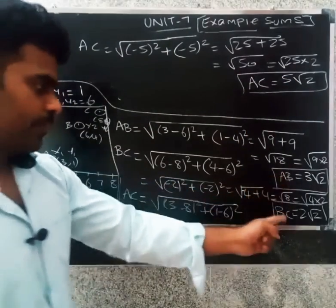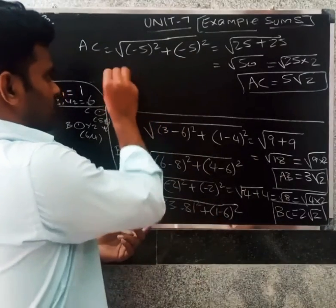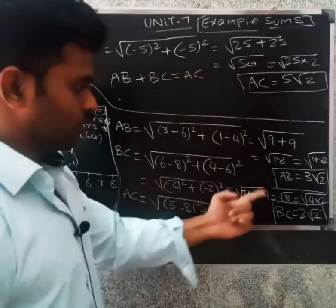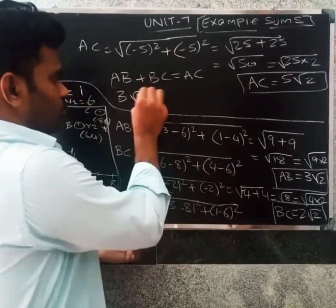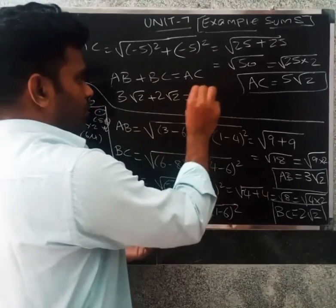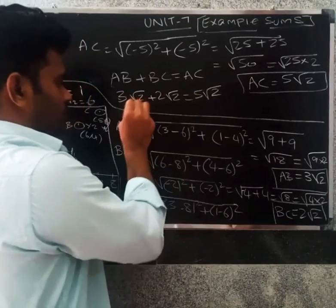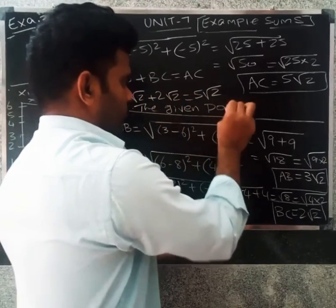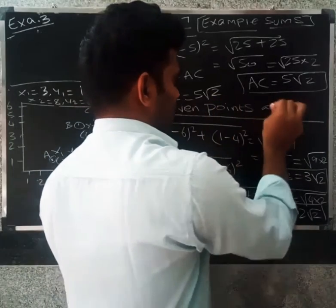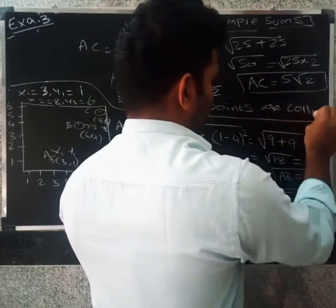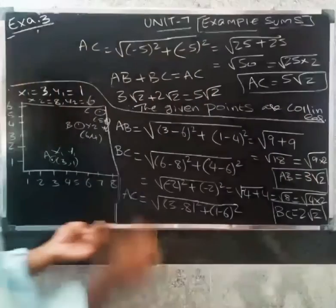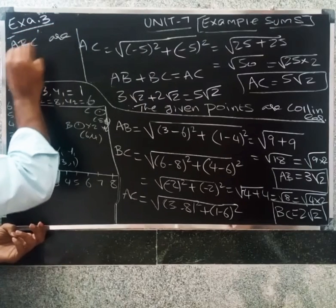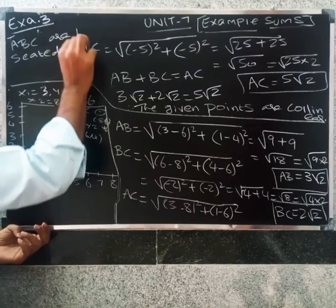Now applying the collinearity condition: AB plus BC equal to AC. So 3 root 2 plus 2 root 2 equals 5 root 2. Therefore, the given points are collinear, and we can conclude that Ashima, Barthi, and Camilla — ABC — are seated in a straight line.